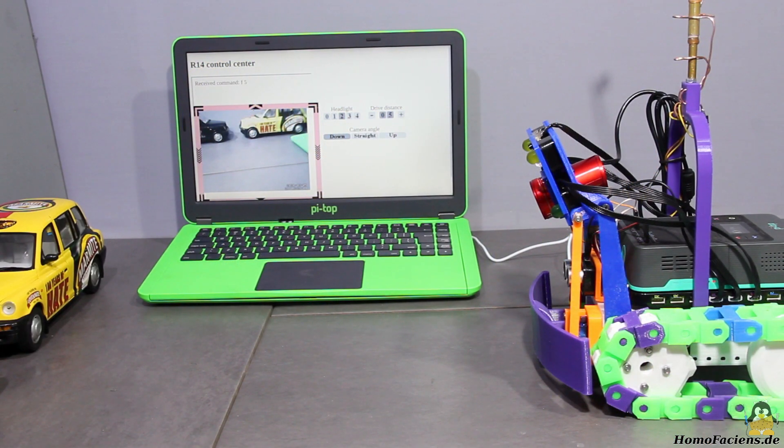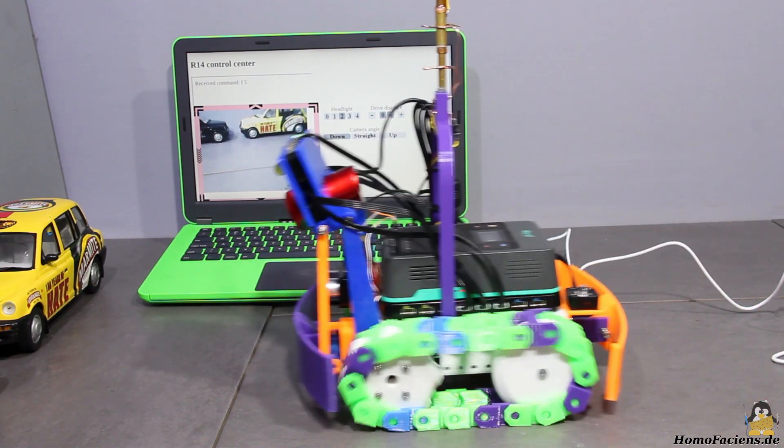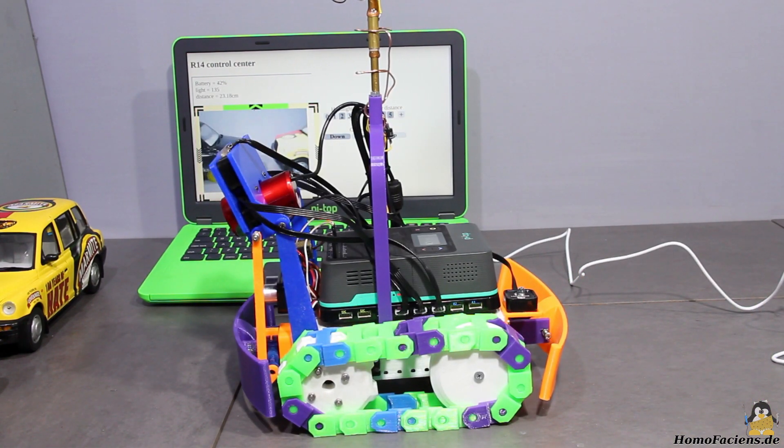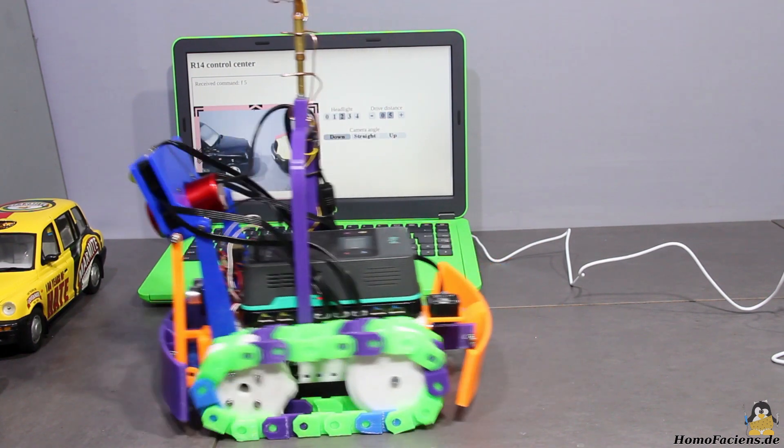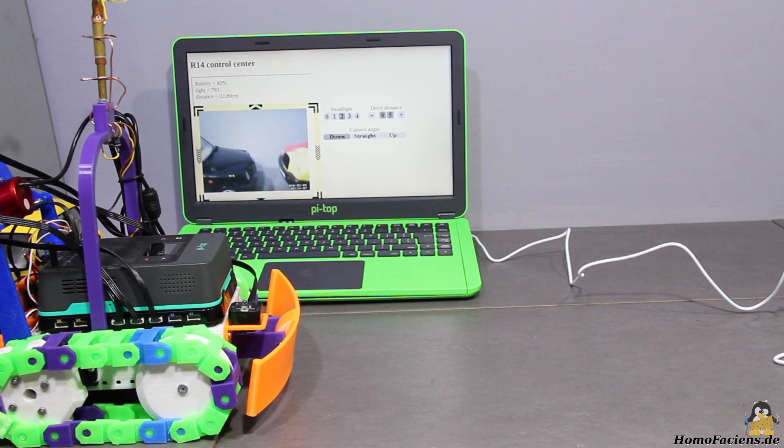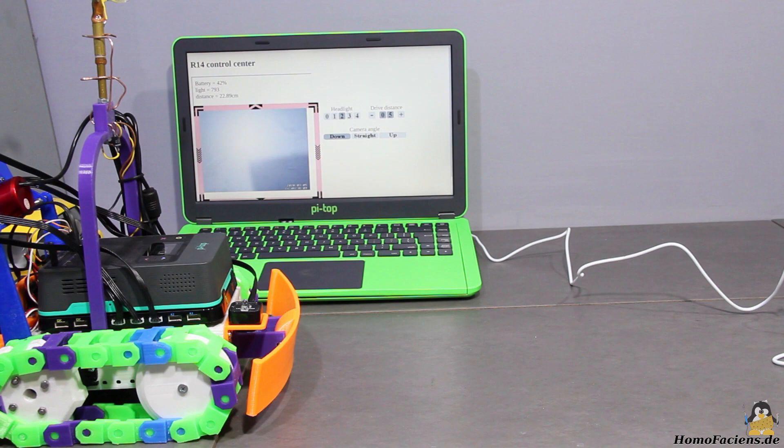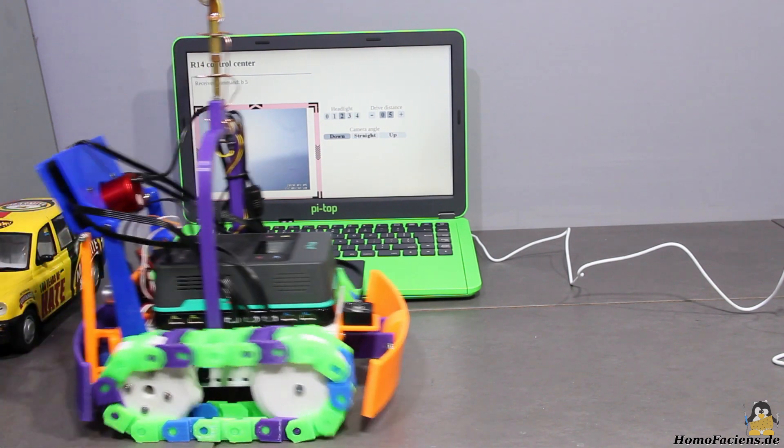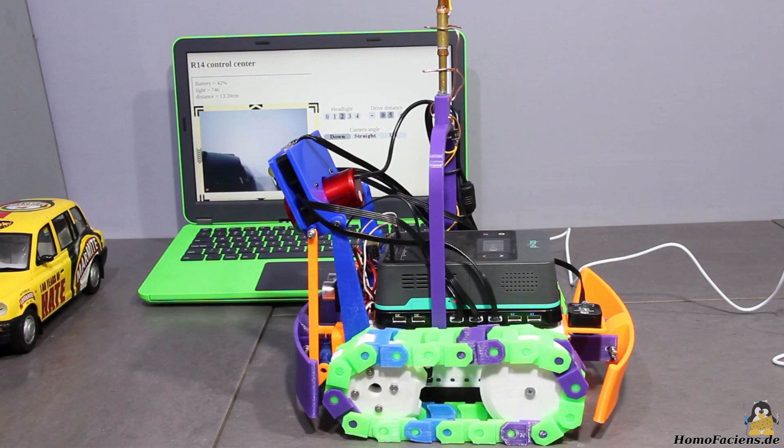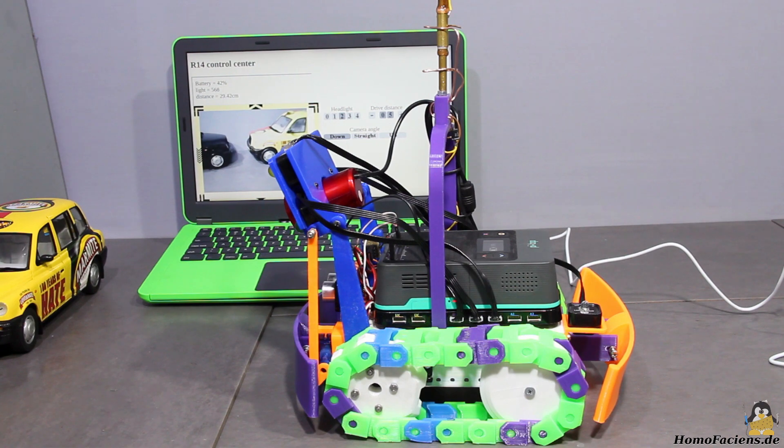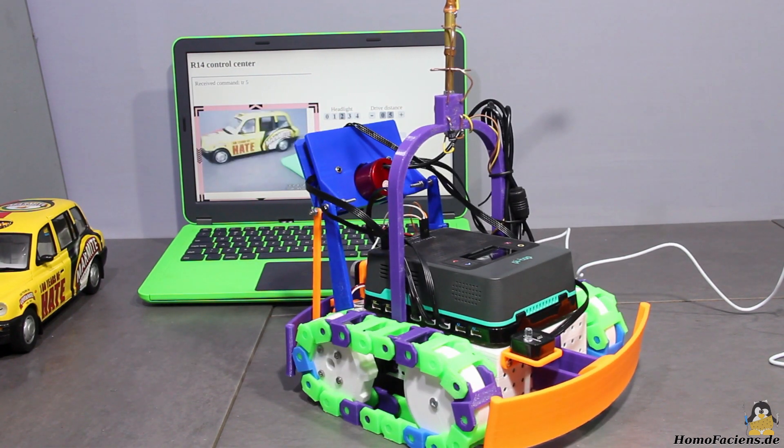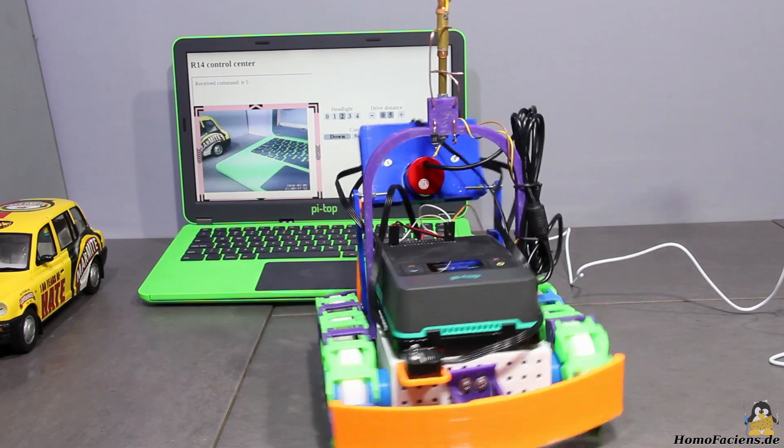After the assembly I had a first test run, whereby I opened the website with the control interface on my Pi-Top 3. R14 can move forward, or backwards, and turn on the spot by controlling the two motors in different directions.